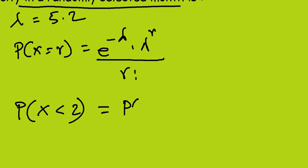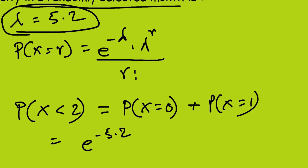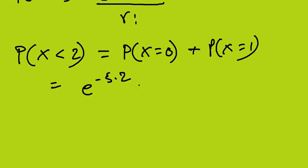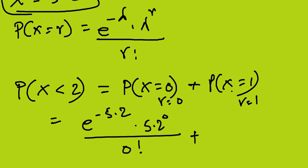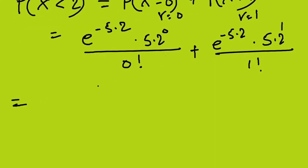P(X < 2) equals P(X=0) plus P(X=1). For P(X=0): e^(-5.2) times 5.2 to the power 0 divided by 0 factorial. For P(X=1): e^(-5.2) times 5.2 to the power 1 divided by 1 factorial. Since 5.2^0 = 1 and 0! = 1, the first term is simply e^(-5.2).